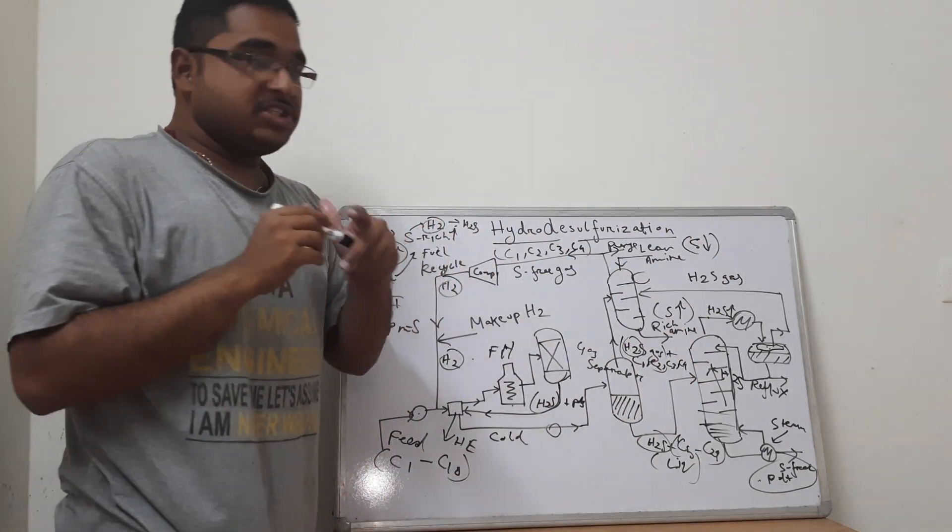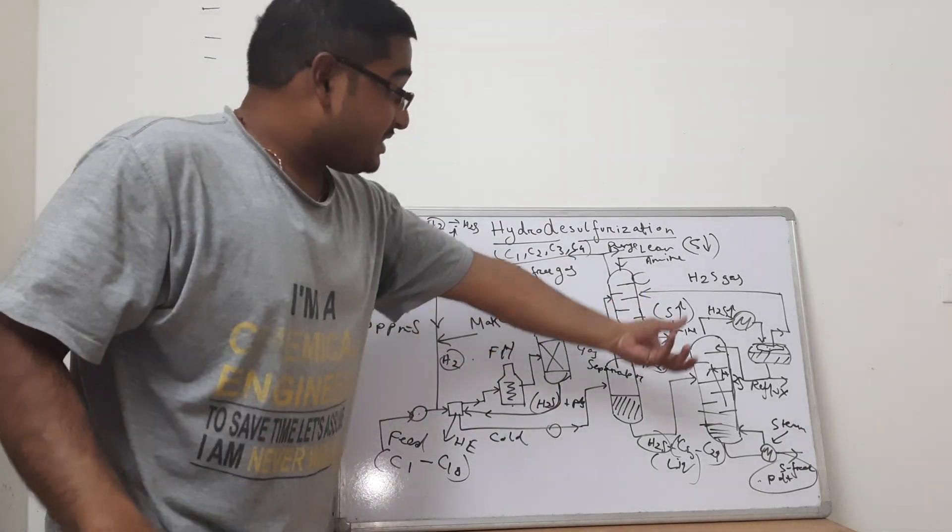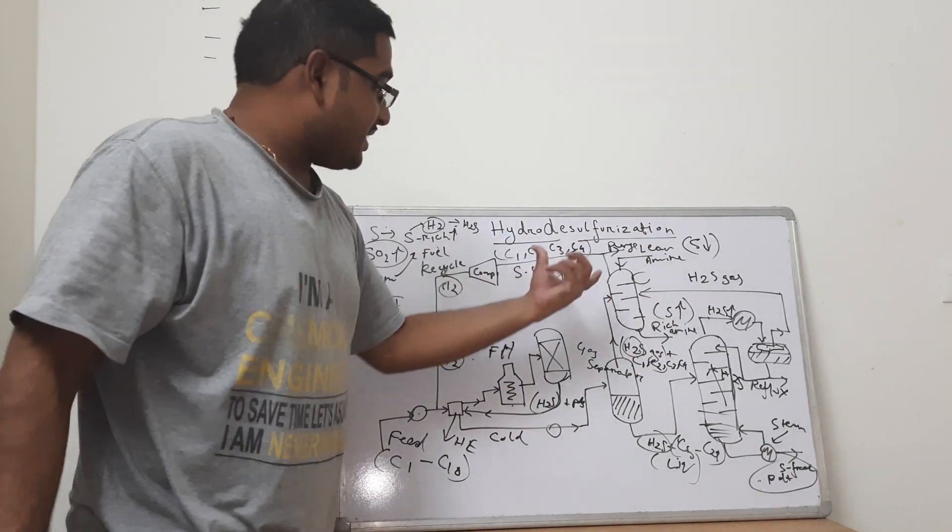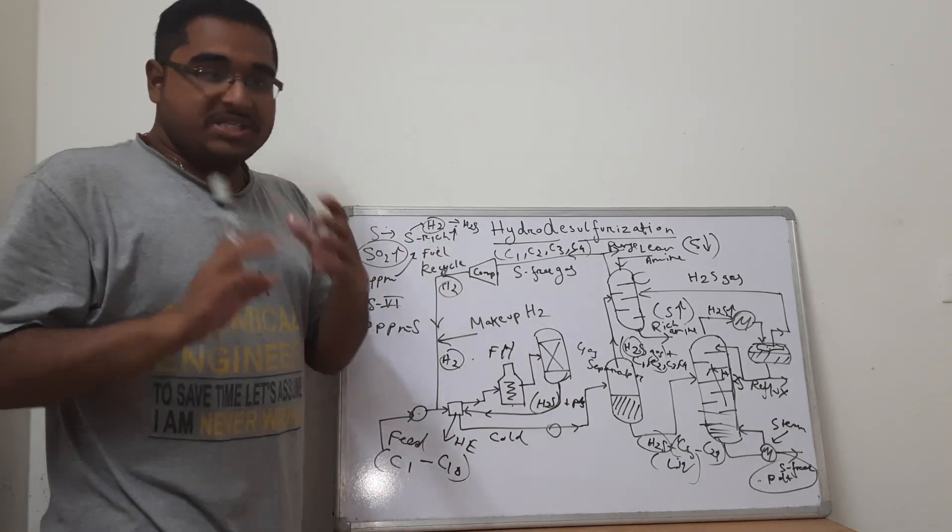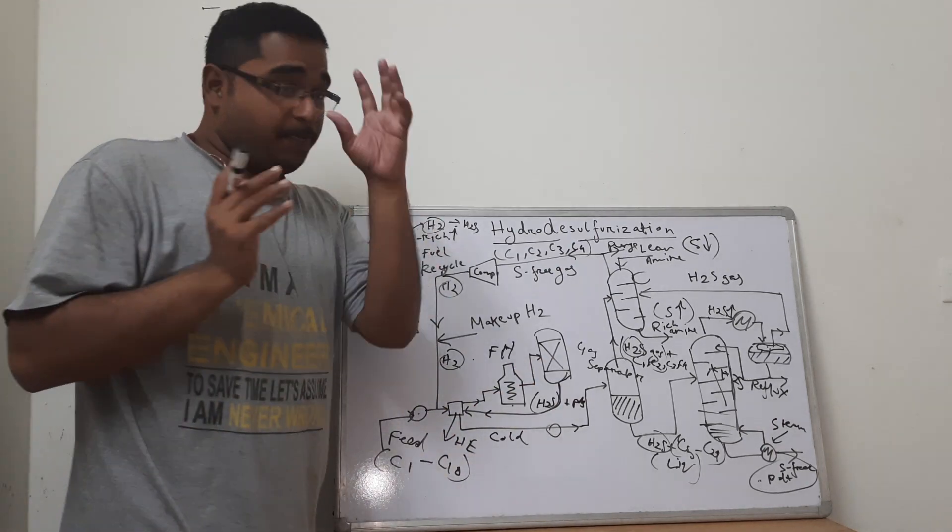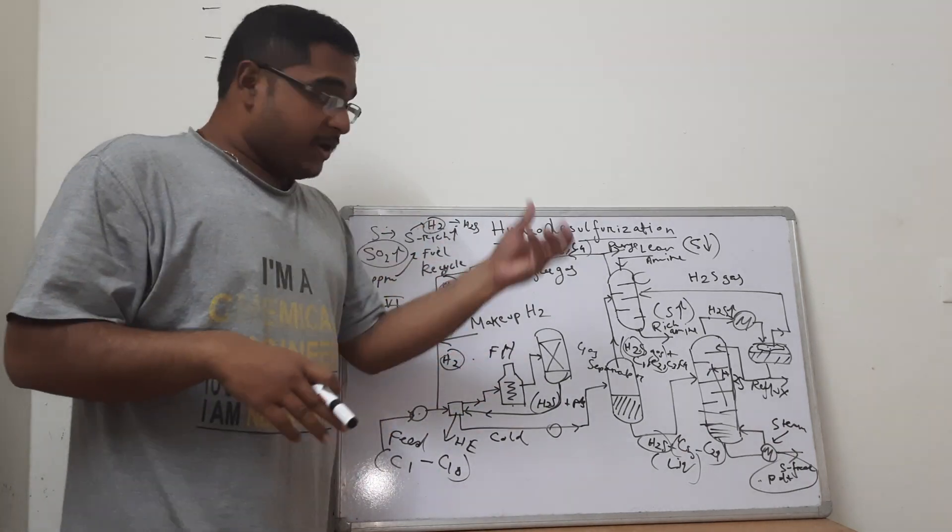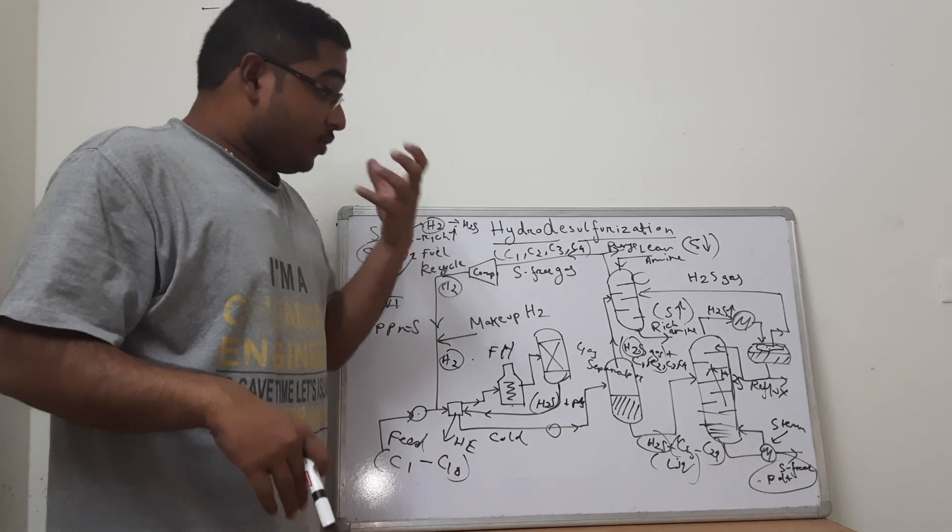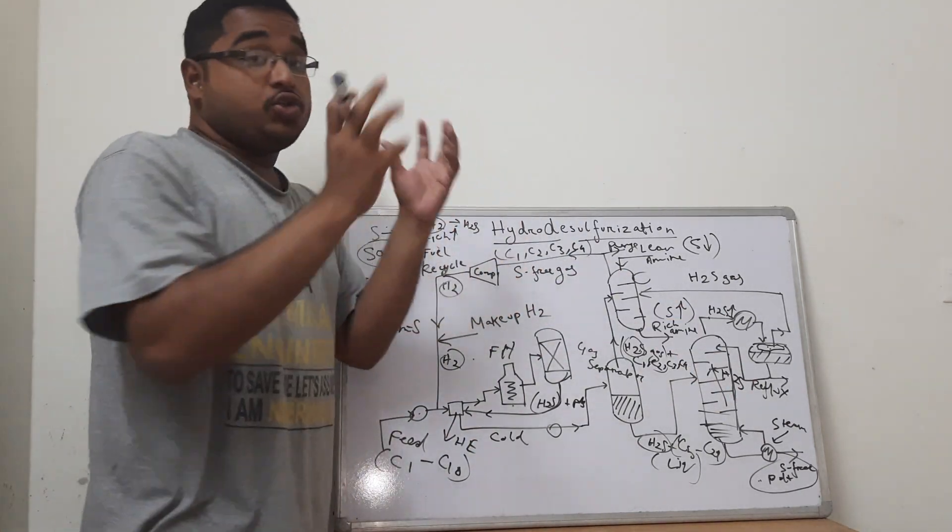Wherein again H2S is being absorbed and the C1, C2, C4 if any that escapes out along with the H2S gas is sent again back into the recycle stream along with the feed. So we see that first we react the sulfur with hydrogen which forms hydrogen sulfide and it gets separated by a flashing operator.